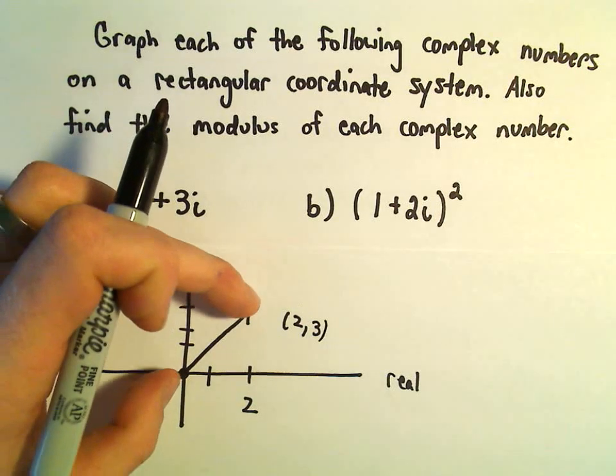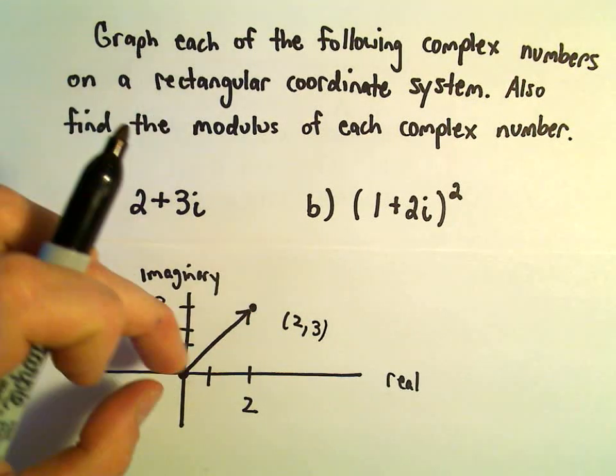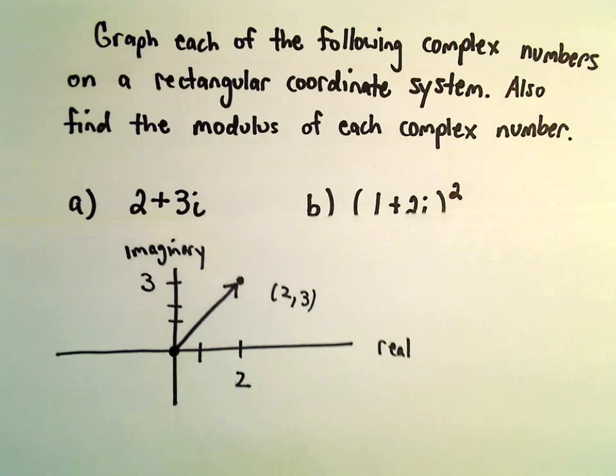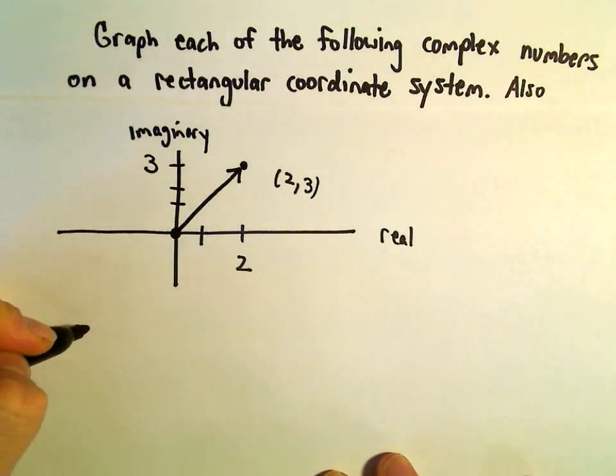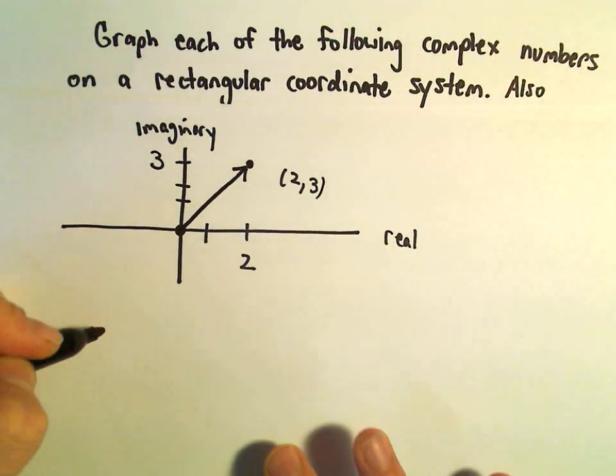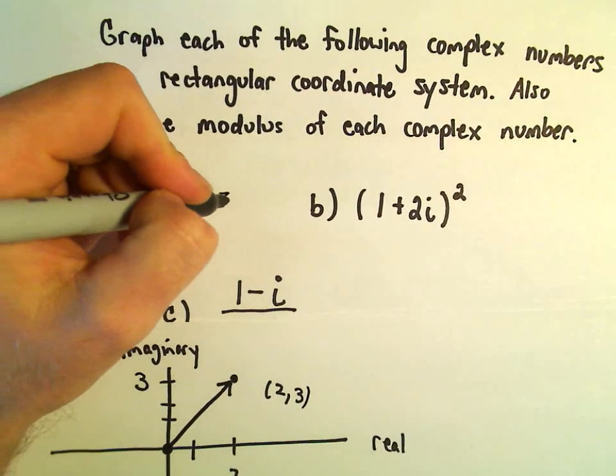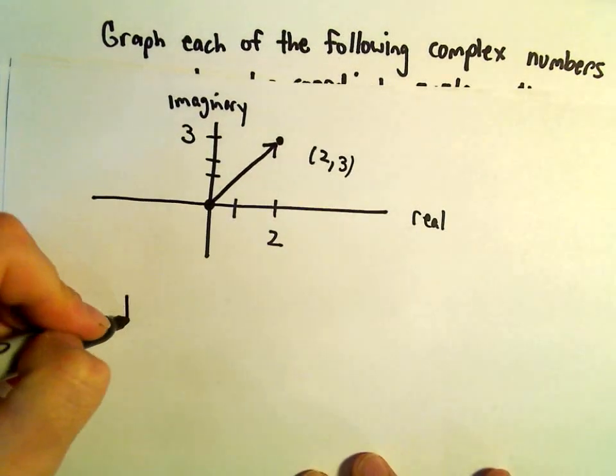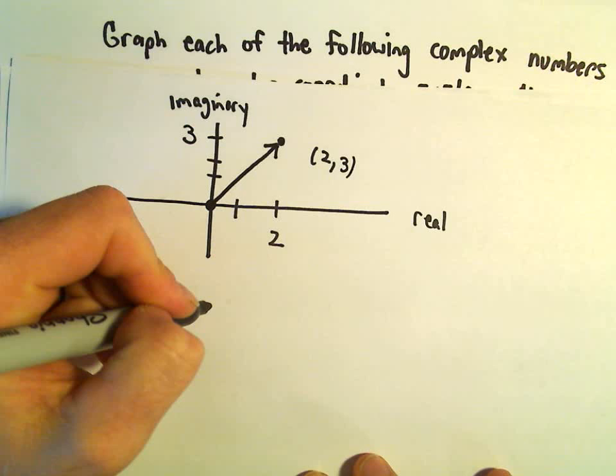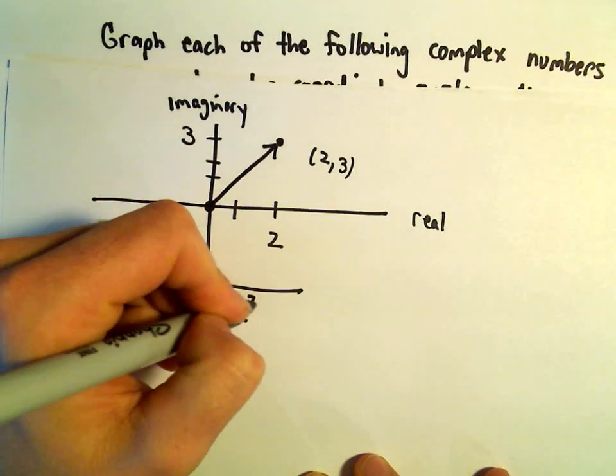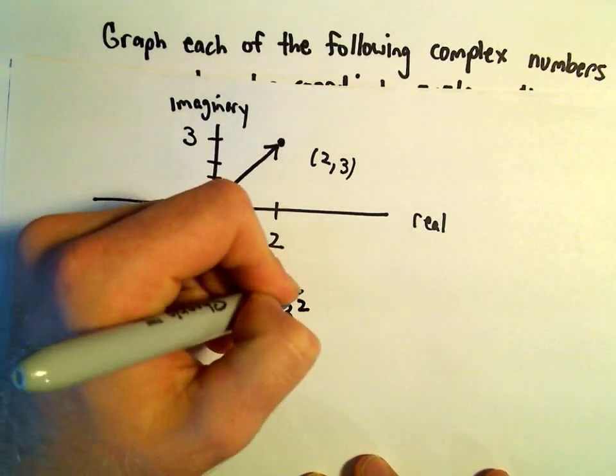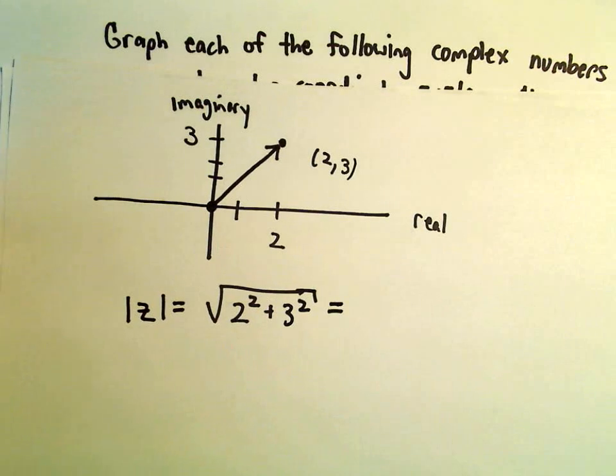It kind of tells you the length, which is going to be important, and also where it's pointing at. To find the modulus, if we call this complex number z, the modulus is found by taking each component, squaring it, adding them together, and taking the square root.